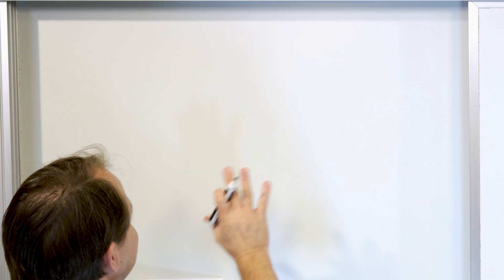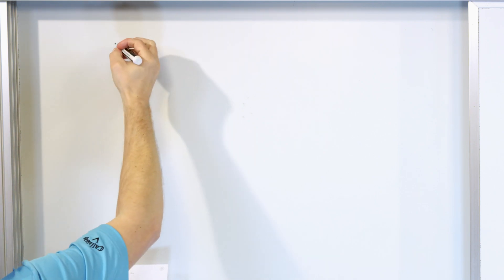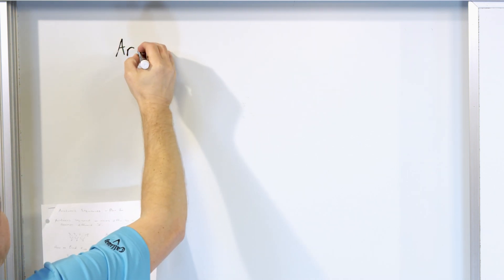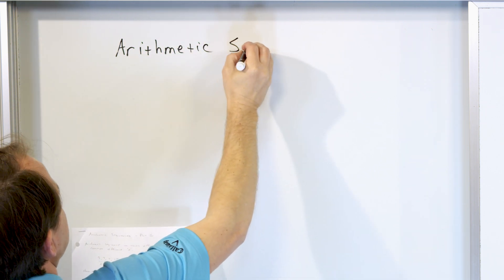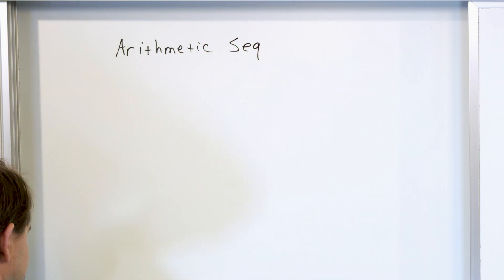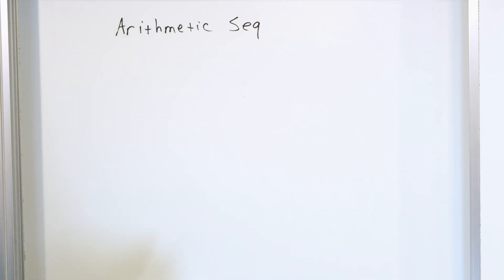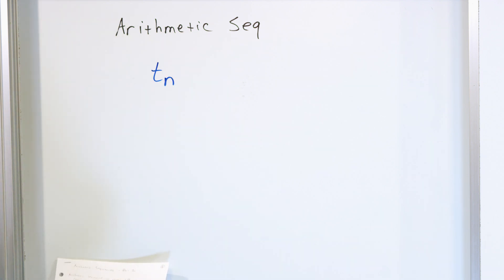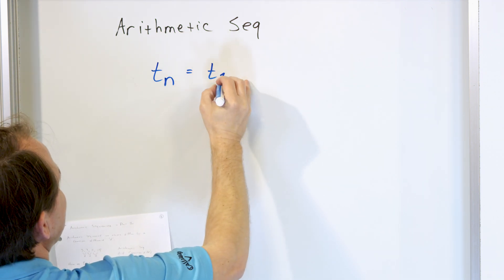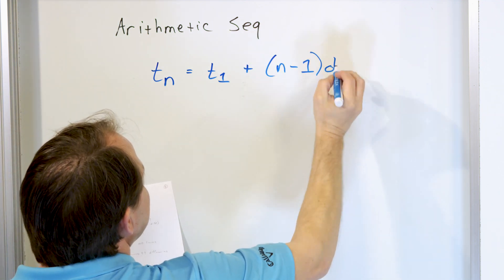Let's just get to the punchline first. In any textbook — algebra, calculus, geometry — you will come across the definition or the equation of an arithmetic sequence. In general, what you will typically see for the nth term of an arithmetic sequence is the following: the nth term is equal to the first term of the sequence plus n minus 1 multiplied by d.